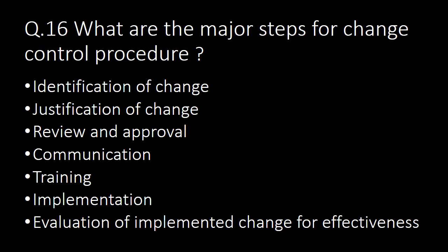What are the major steps of the change control procedure? The procedure starts with identification of the change, where the current system and proposed system are identified. Next is justification or reason for change, followed by review and approval. After approval, communication of approved changes is done and training is imparted to concerned personnel. The next stage is implementation of approved changes, and the final stage is evaluation of implemented changes for their effectiveness.